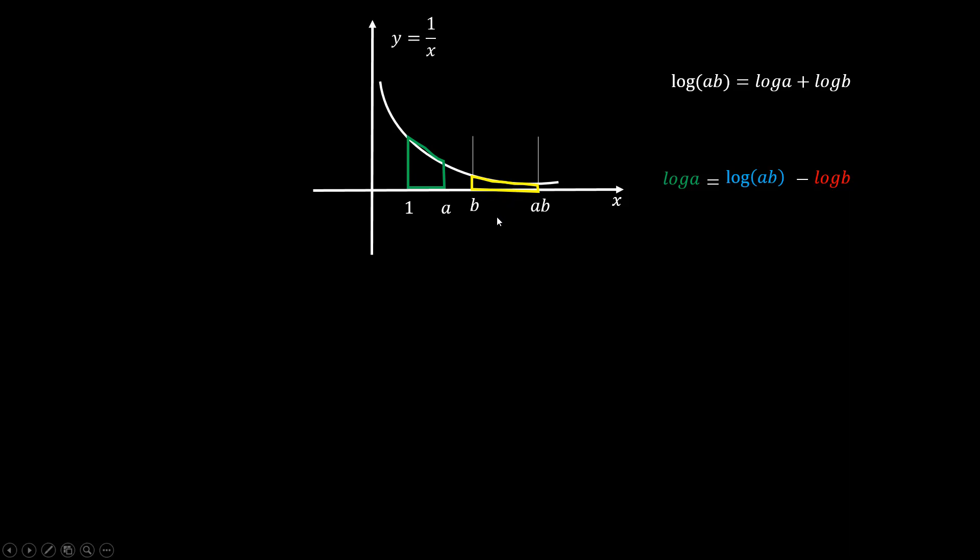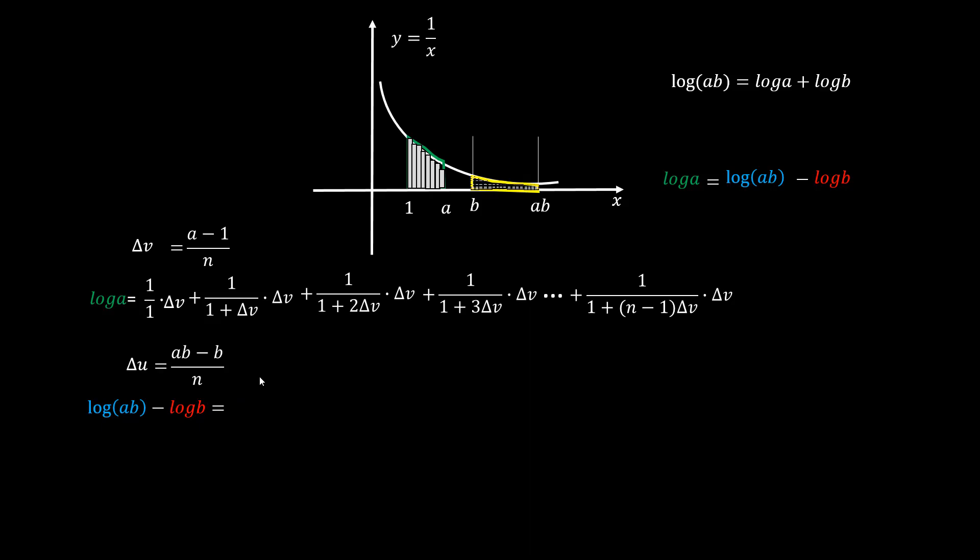Now let's prove that using algebra. Think about area log A by dividing the width into N intervals and sum up the area. For the yellow area, it's the area under the curve from B to AB. We divide the length into N intervals and then add up those incremental areas.